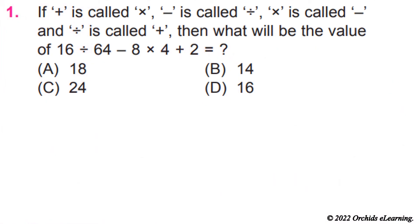If plus symbol is called multiply symbol, minus symbol is called divide, multiply is called minus, and divide is called plus, then what will be the value of 16 divide by 64 minus 8 multiply 4 plus 2 equals? The answer is D, 16.